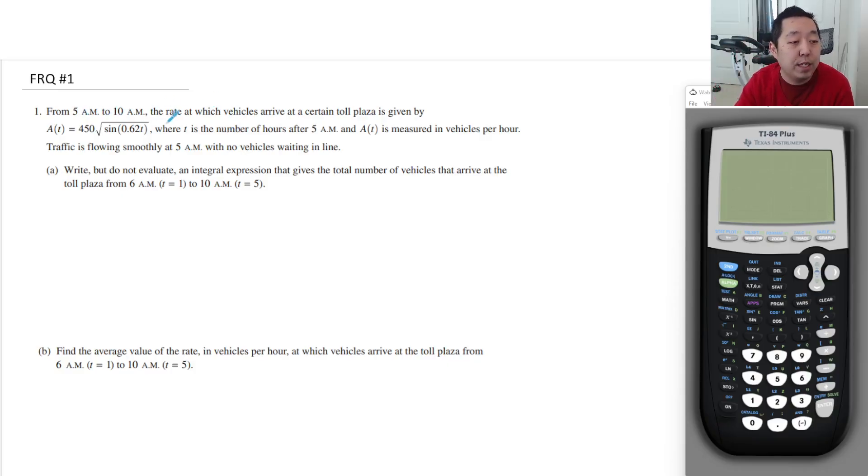Okay, so from 5am to 10am, the rate at which vehicles arrive at a certain toll plaza is given by this. Where t is the number of hours after 5am and A(t) is the measure of vehicles per hour. Traffic is flowing smoothly at 5am with no vehicles waiting in line. Write but do not evaluate an integral expression that gives the total number of vehicles that arrive at the toll plaza from 6am (t equals 1) to 10am. Okay, so this is just making sure you understand that this is the rate at which cars are arriving. So the total number of cars is the integral from 1 to 5 of the rate, 450 root sine of 0.62t dt. Boom, that's it.